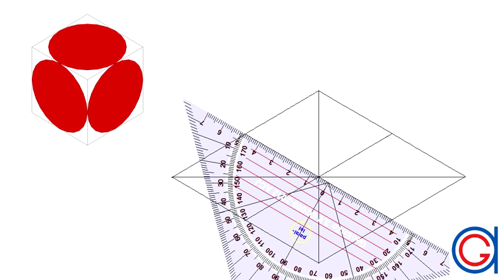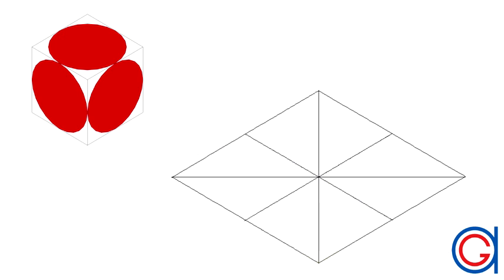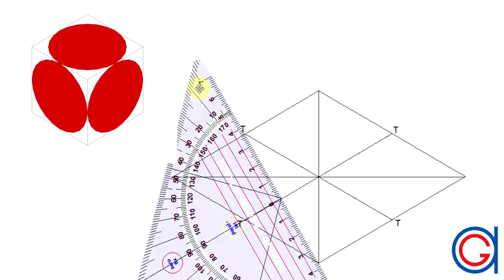These lines will create four new points on the rhombus which we are going to call t. These points represent the tangent points of our oval.